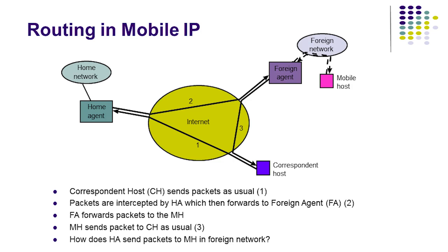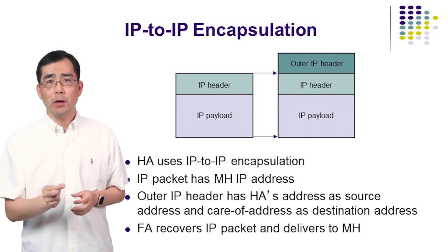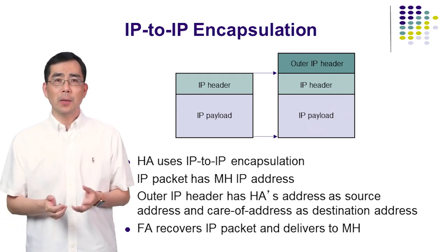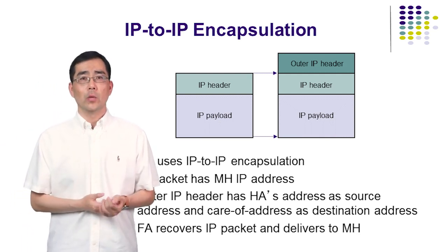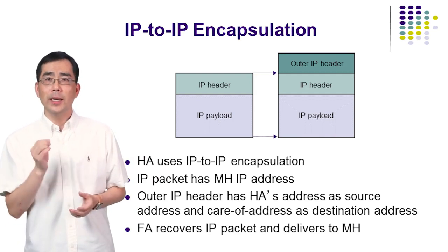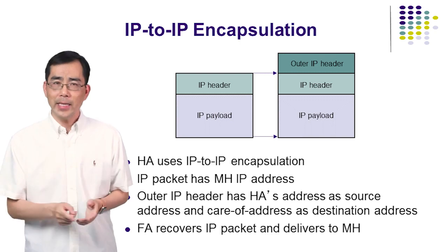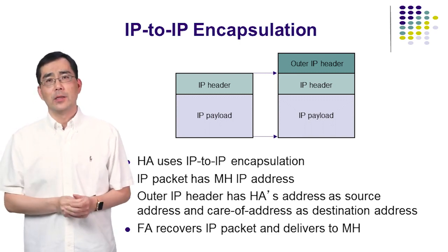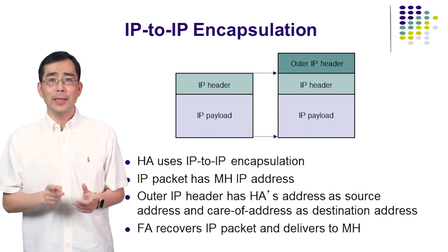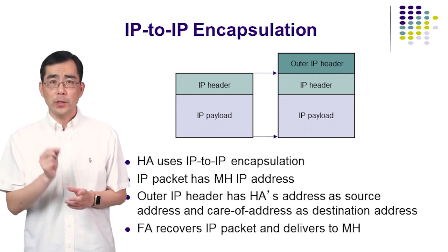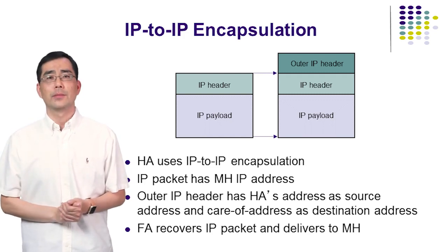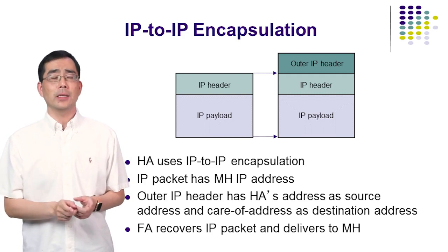The question is: how does the home agent send packets to the mobile host in a foreign network? The problem is solved by providing a tunnel between the home agent and the foreign agent, implemented by encapsulating each IP packet at the home agent with an outer IP address containing the home agent address as the source IP address and the care-of address as the destination IP address. When the foreign agent receives the packet, it decapsulates the packet, producing the original IP packet with the correspondent host address as the source IP address and the mobile host address as the destination address. The foreign agent can then deliver the packet to the mobile host.